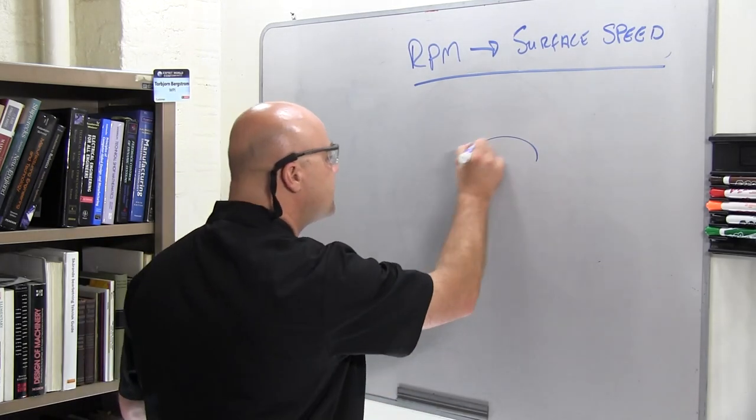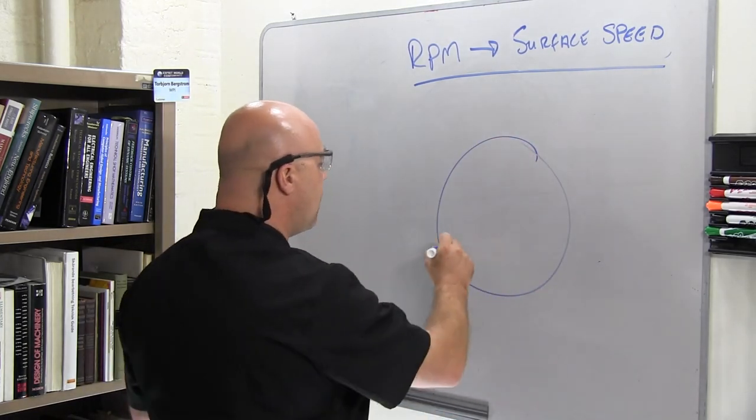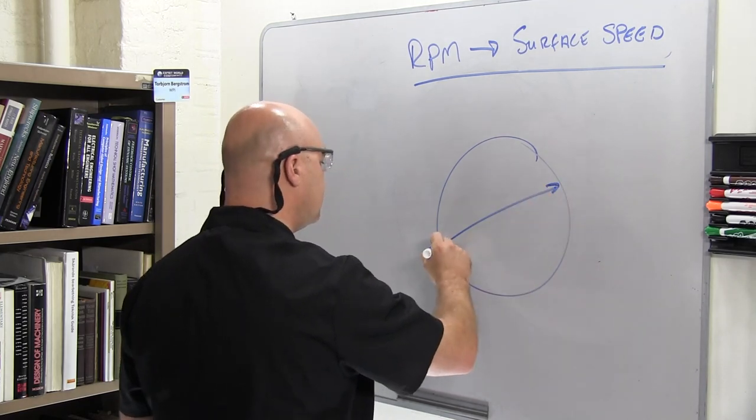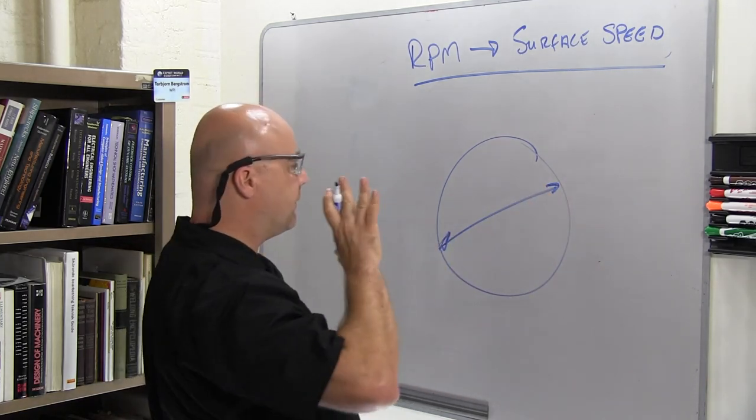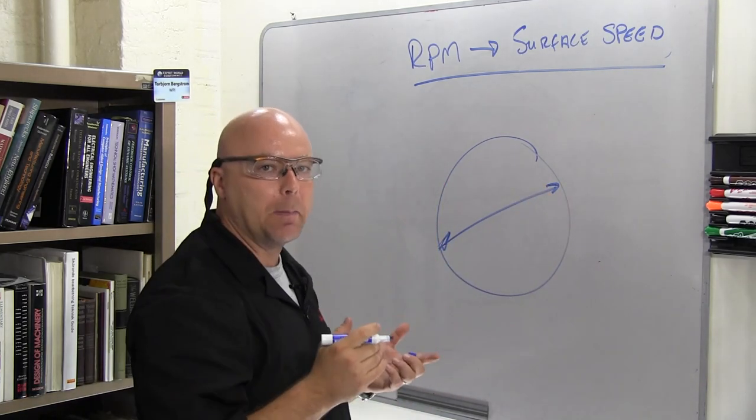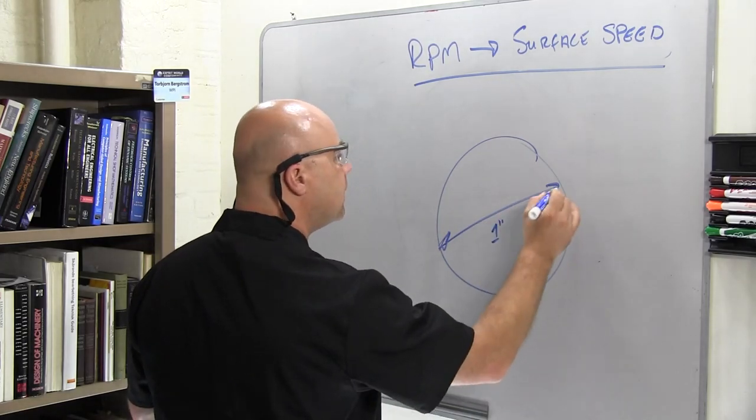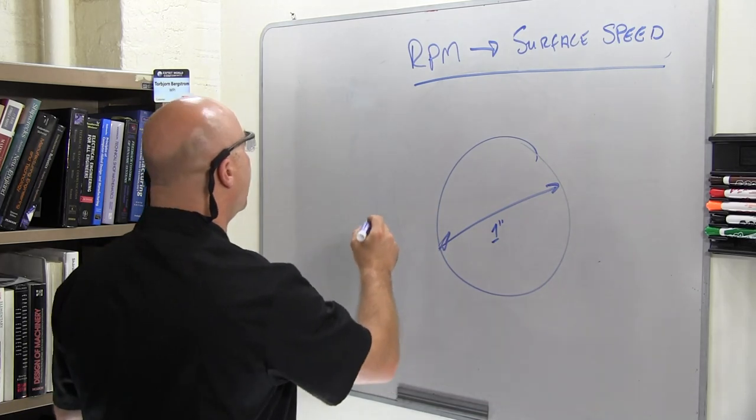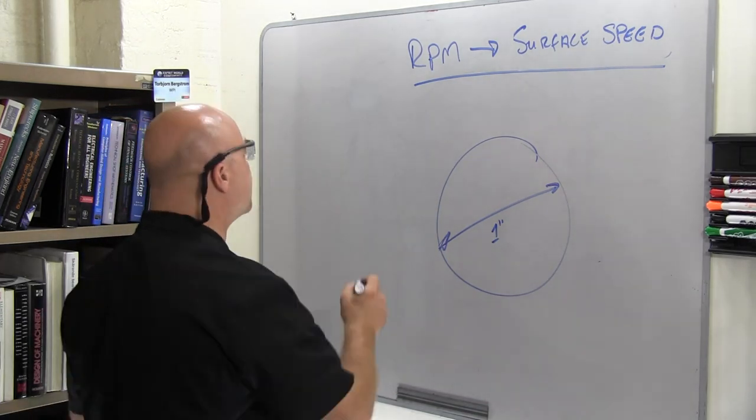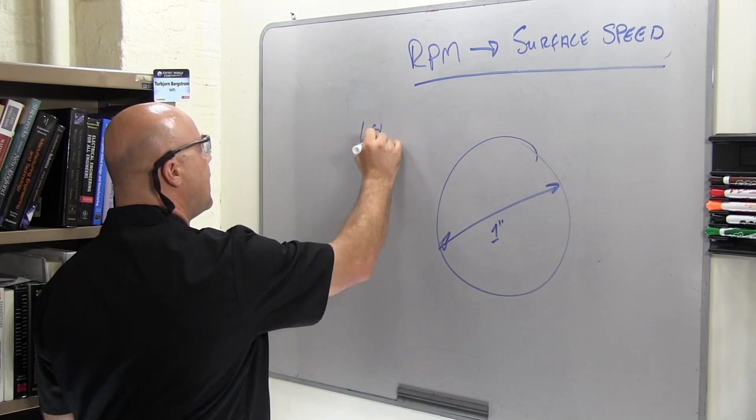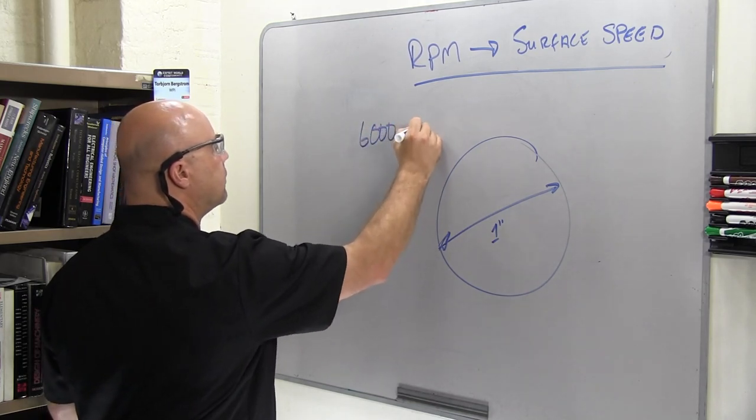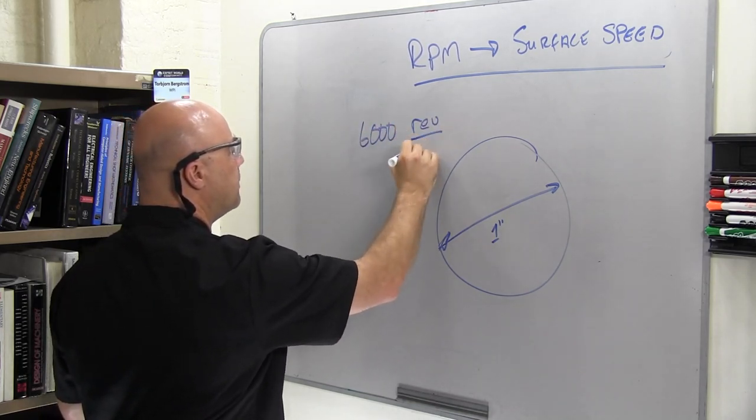Let's look at an end mill, and we'll say that it's a 1 inch diameter end mill. We're looking at it as if it was plunging towards us, which is probably a bad position to be in the machine tool. We'll call this 1 inch diameter, and we've got, let's say, 6,000 revolutions per minute.